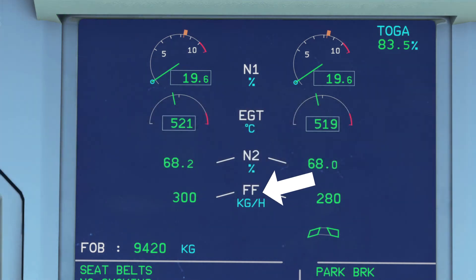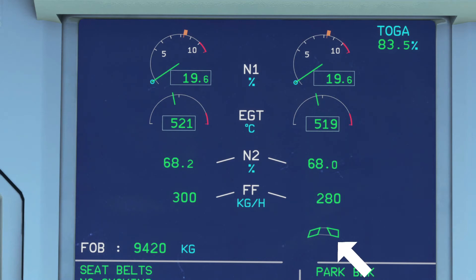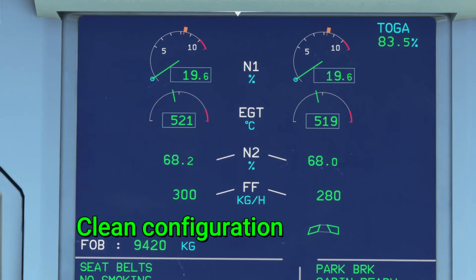The fuel flow is simple — it shows you what your fuel flow rate per hour is, given in pounds or kilograms. Last for the top part is the slat position. It's very basic; it shows you what the current position is at the moment.